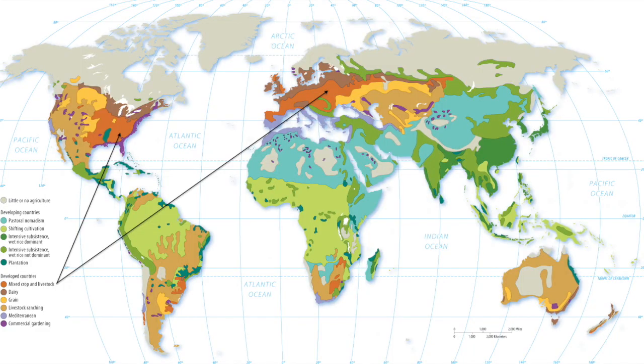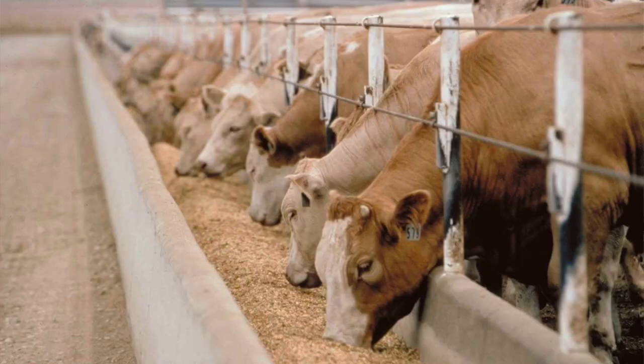Our next form of agriculture is mixed crop and livestock. We tend to find this in the Midwest United States, Canada, and Northern Europe. This is when we grow crops such as corn just to feed the livestock such as cows. This makes the cow a fatter animal, which makes a juicier steak, and it makes the cow weigh more so the farmer makes more money. We also find that cows that eat things like grains produce more milk, which is good for the dairy farmer.